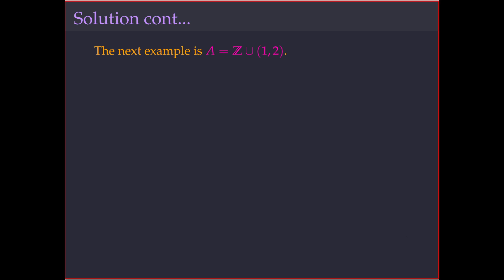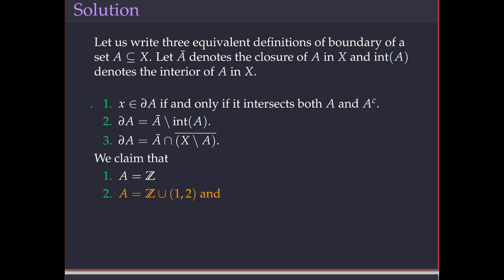The second example is A = ℤ ∪ (1,2) — an open interval not containing any integers. We claim ∂A = ℤ. This time let's use the second definition: boundary of A equals closure of A minus interior of A.